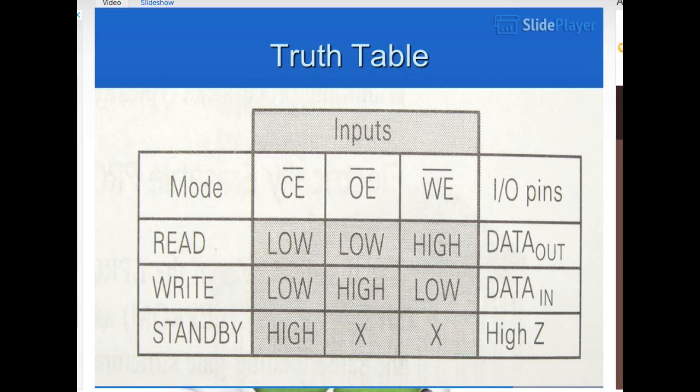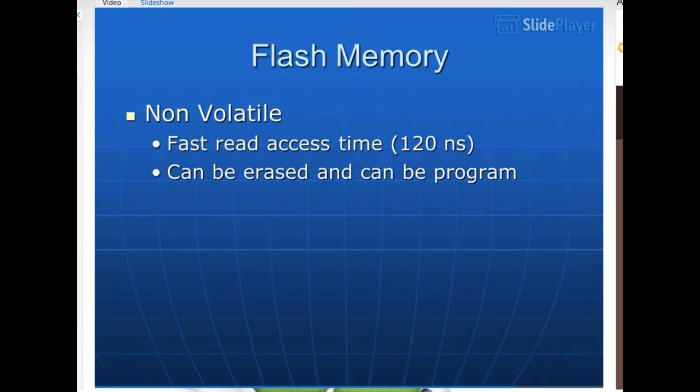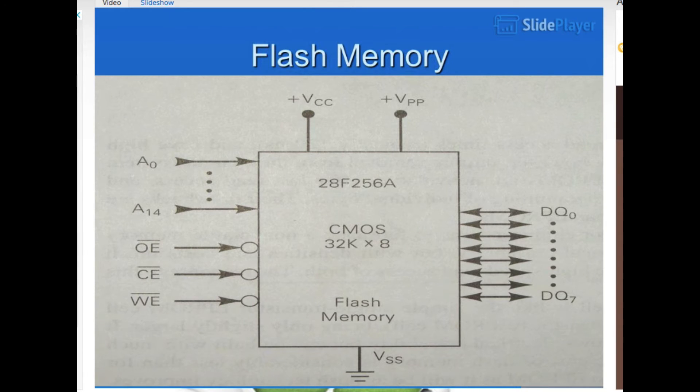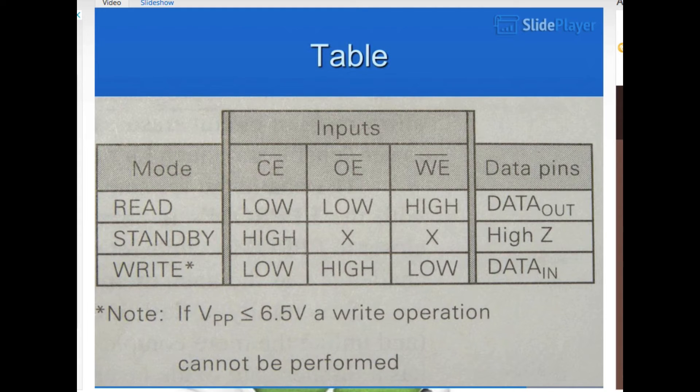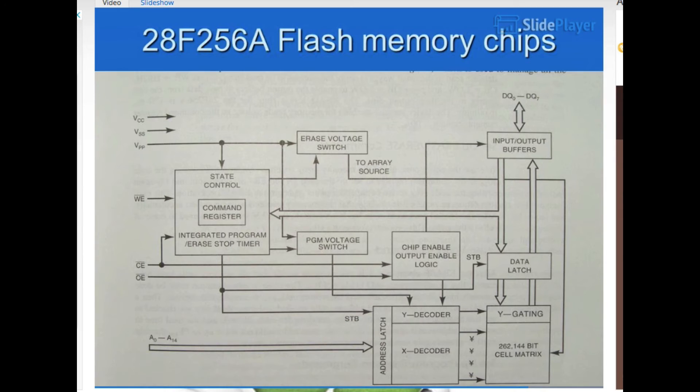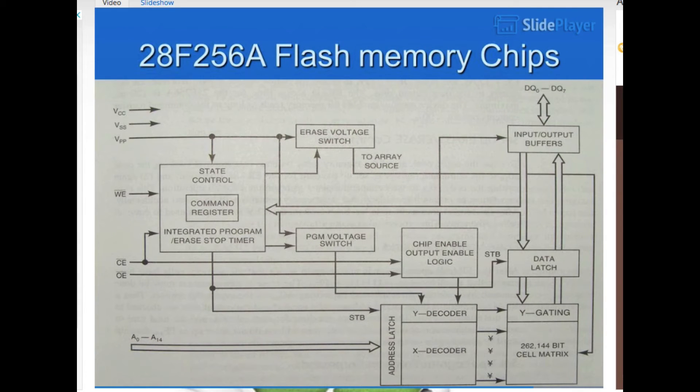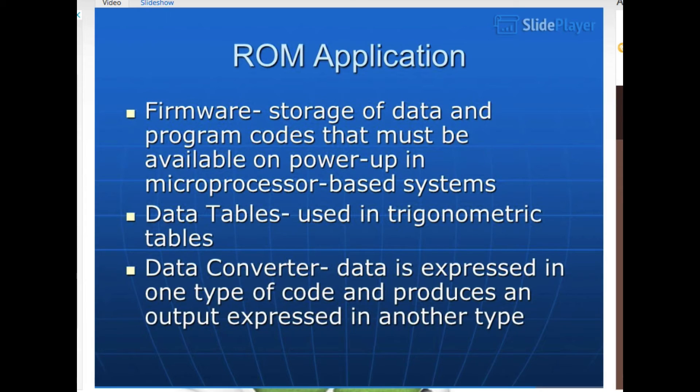Flash memory. Non-volatile, fast read access time, 120 nanoseconds. Can be erased and can be programmed. Flash memory table. 28F256A flash memory chip. ROM applications. Firmware storage of data and program codes that must be available on power-up in microprocessor-based systems. Data tables used in trigonometric tables. Data converter, data is expressed in one type of code and produces an output expressed in another type.